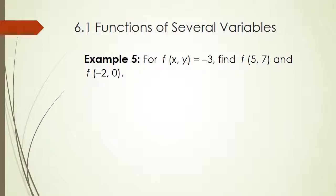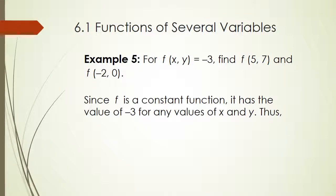Now we have for F of X, Y equals negative 3, find F of 5, 7, and F of negative 2, 0. Now this may seem a little confusing, but it's a constant function. F of X, Y is negative 3 no matter what X and Y are. So it's always going to be negative 3. I know, a little tricky.